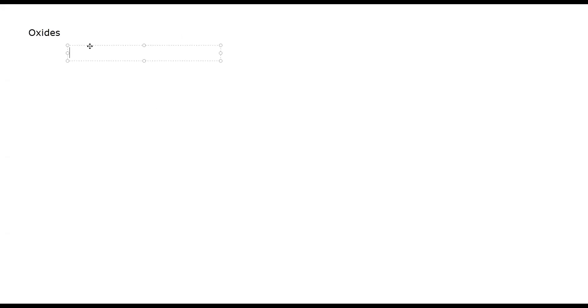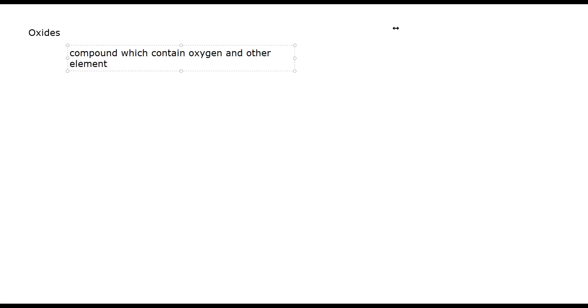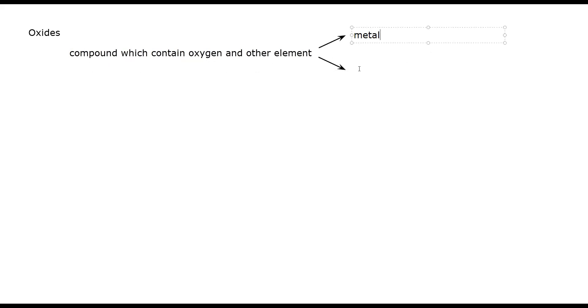What are oxides, or what's the definition of oxide? A compound which contains oxygen and other elements. So if a compound has oxygen and other elements, and this other element can be a metal or a non-metal — both possibilities are there — we call that compound an oxide.